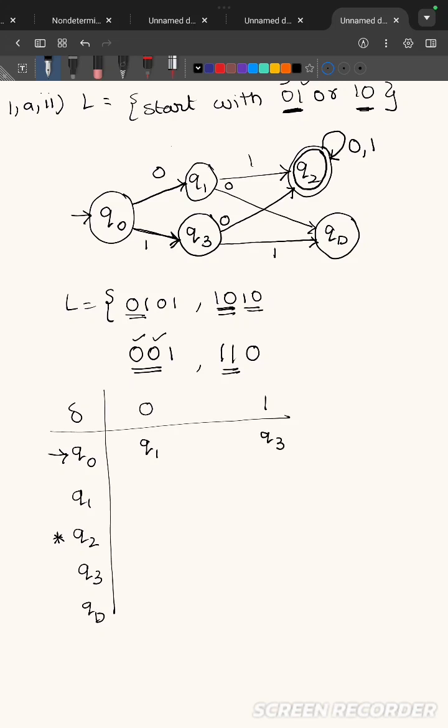q1 on 0 goes to the dead state. q1 on 1 goes to the final state. The final state will remain in the final state only.